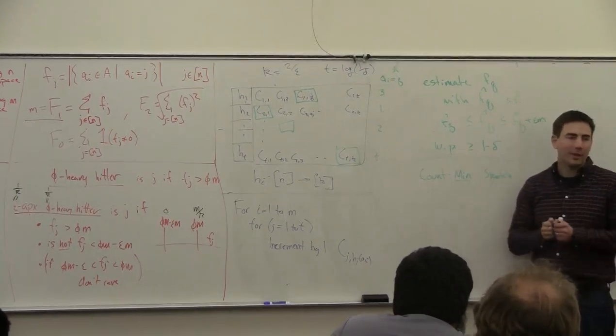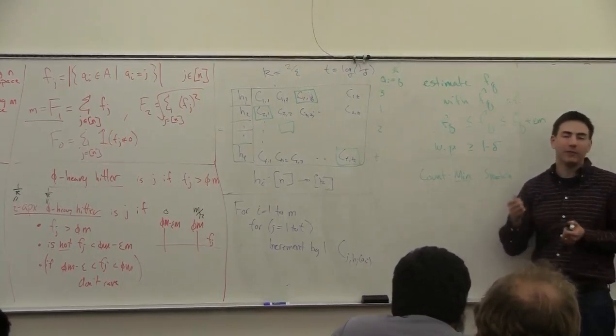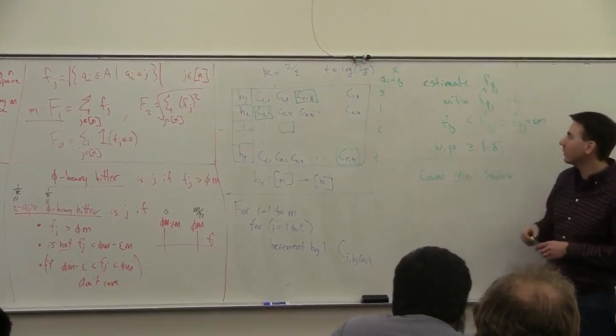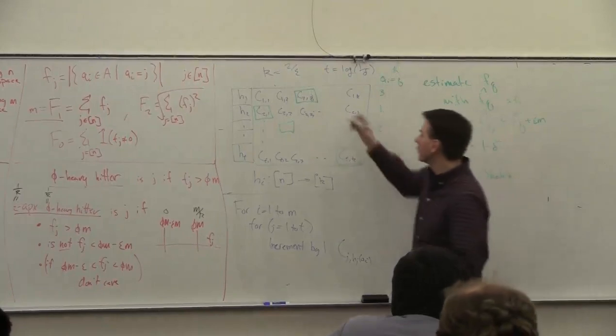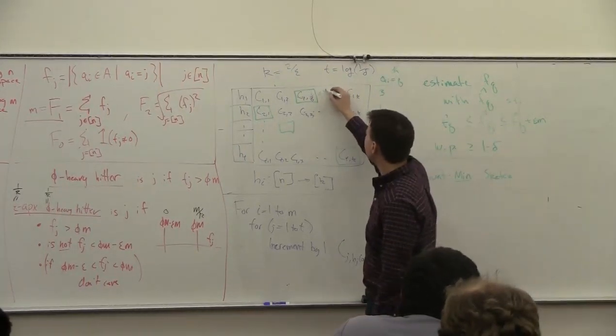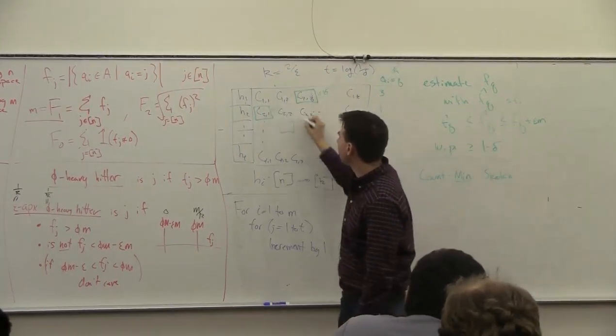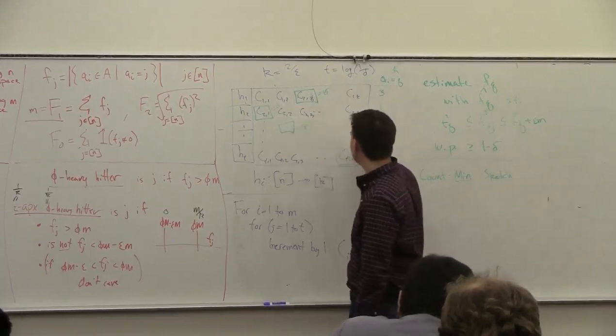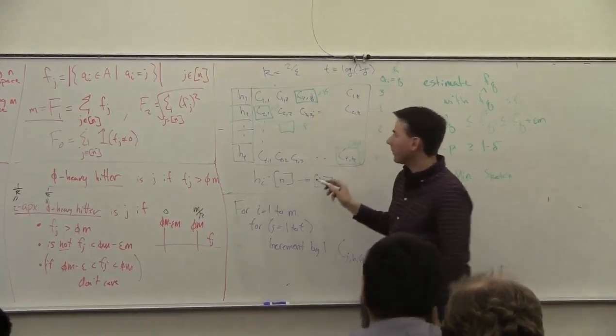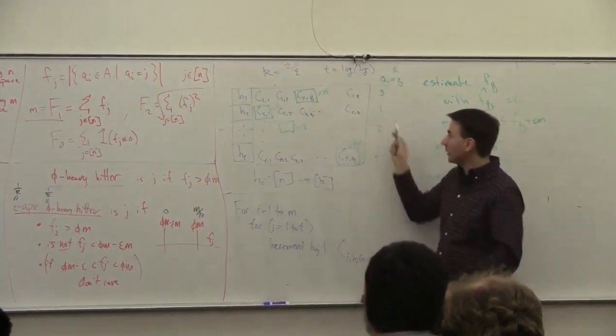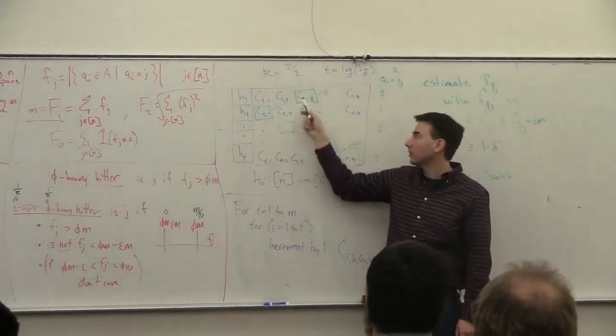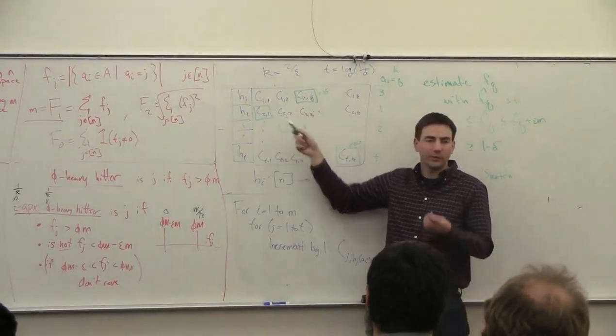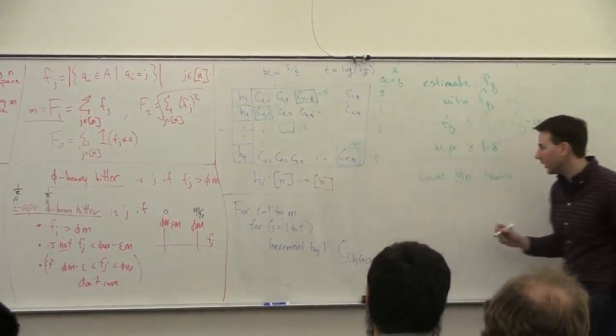So I might as well pick the smallest one. If the value for q, say, was 10, and I had values—this one was like 15, this was 11, this was 18, and this one was 20—I know they all must be at least as big as the right value, so they can't be any smaller than this. So I might as well take the smallest one.